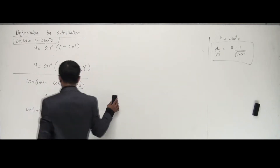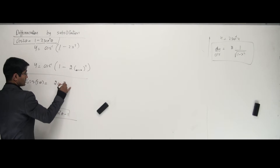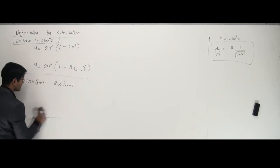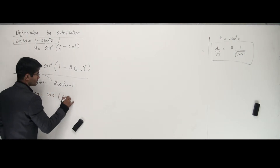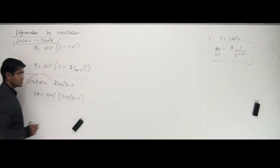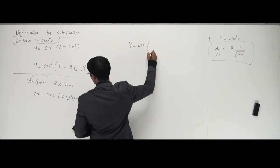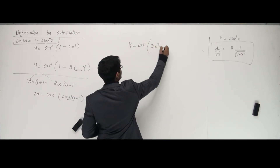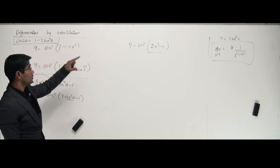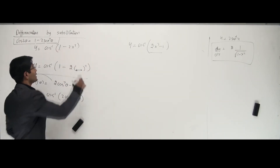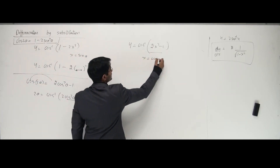Based on this formula, if I put cos on the other side: 2 theta equals cos inverse of 2 cos squared theta minus 1. So I can write a question as y equals cos inverse of 2x squared minus 1. This is similar to the previous type but now I take x as cos theta, because this is based on the 2 cos squared theta minus 1 formula.